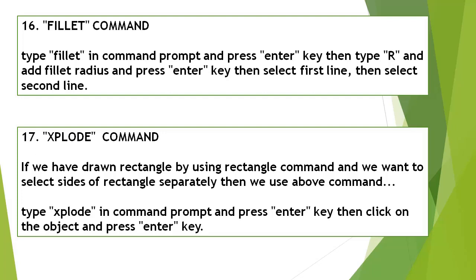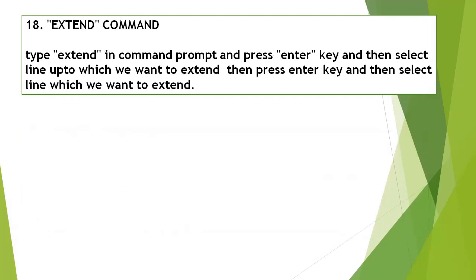Explode Command: If you have drawn a rectangle using the Rectangle command and want to select the sides of the rectangle separately, use the Explode command. Type Explode in the Command Line Window and press Enter, then click on the object and press Enter. Extend Command: Type Extend in the Command Line Window and press Enter, then select the line up to which you want to extend, press Enter, and then select the line which you want to extend.